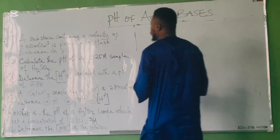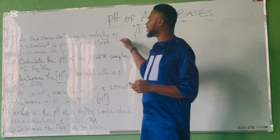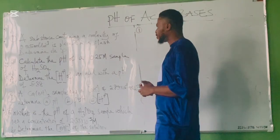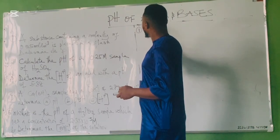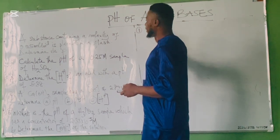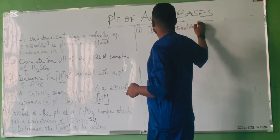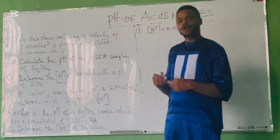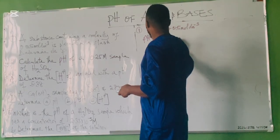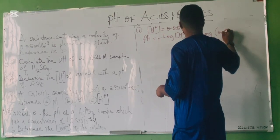Question 1: A substance has a molarity (concentration) of 0.05 mol/dm³. Determine the pH. We have the concentration [H⁺] = 0.05 mol/dm³. Remember that mol/dm³, mol per litre, and molar all mean the same thing. So we apply: pH = −log[H⁺].